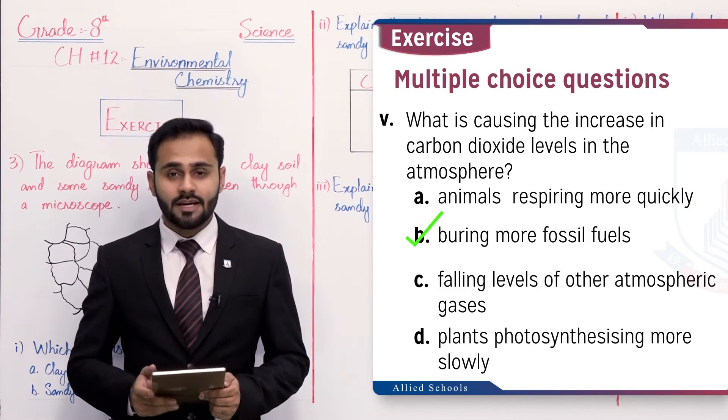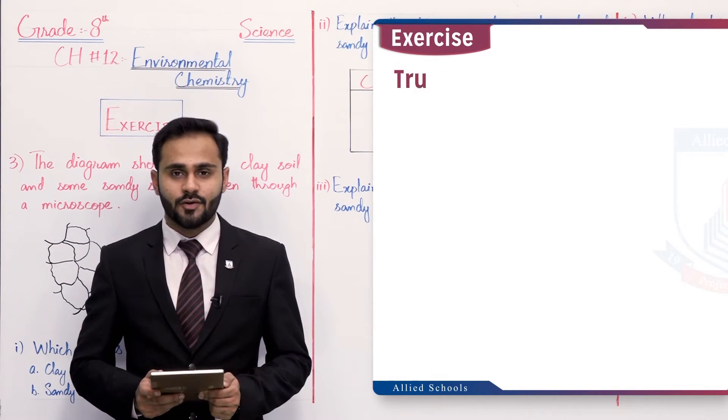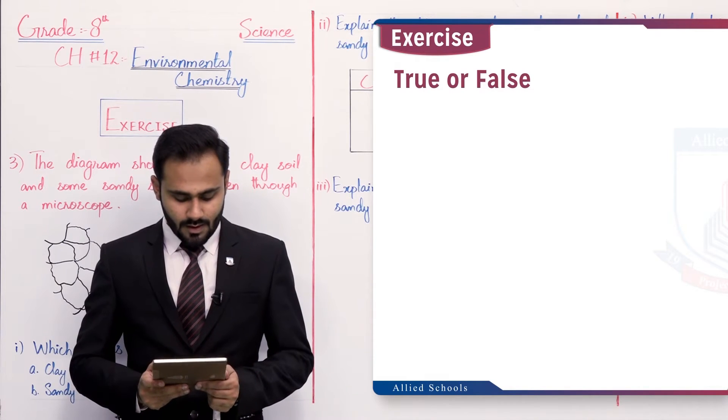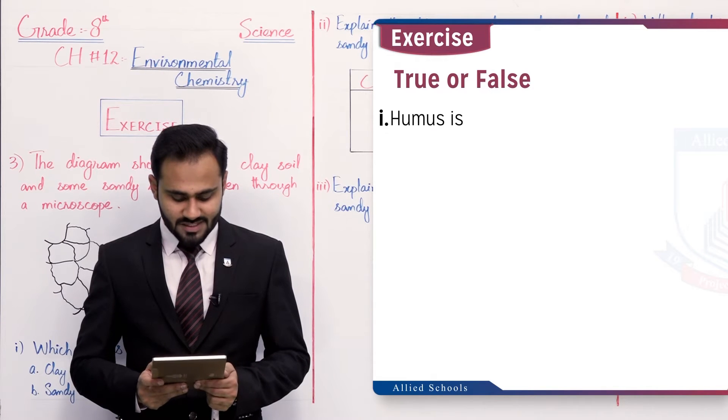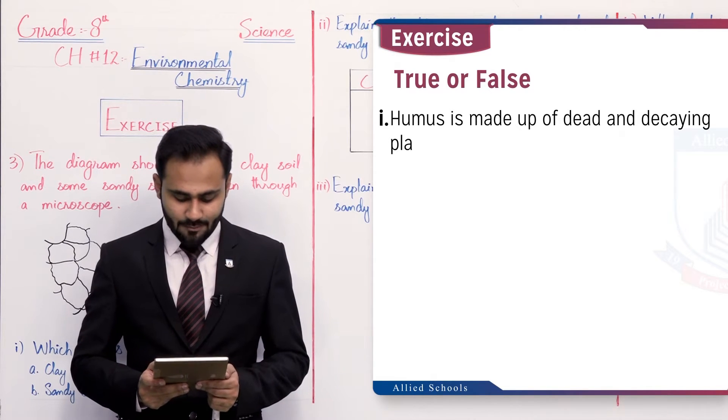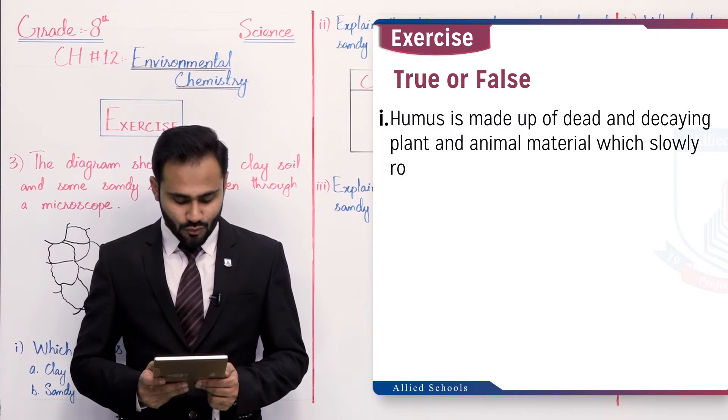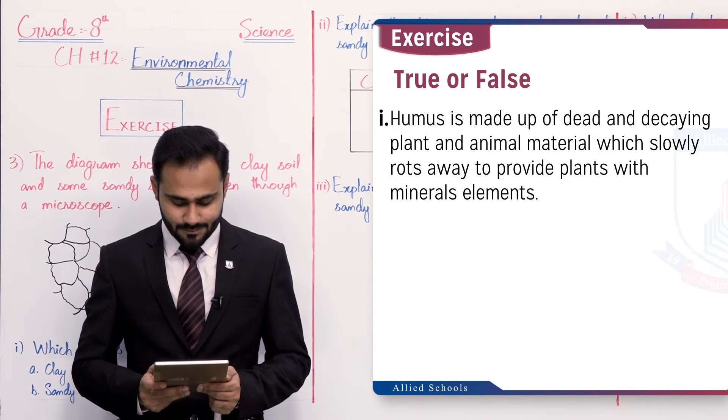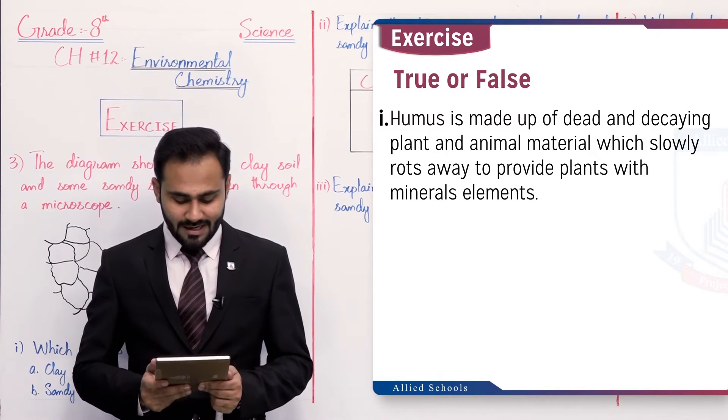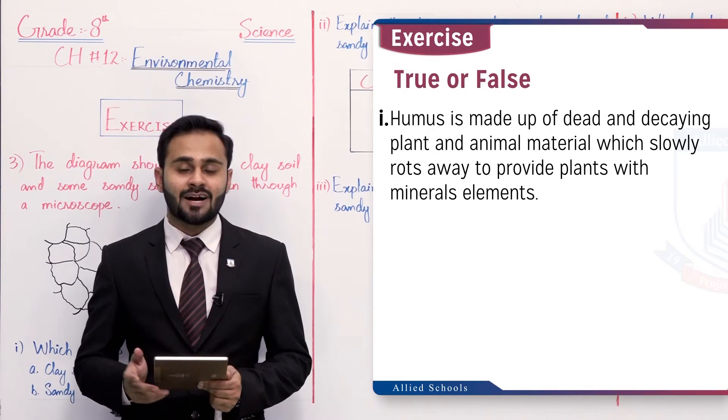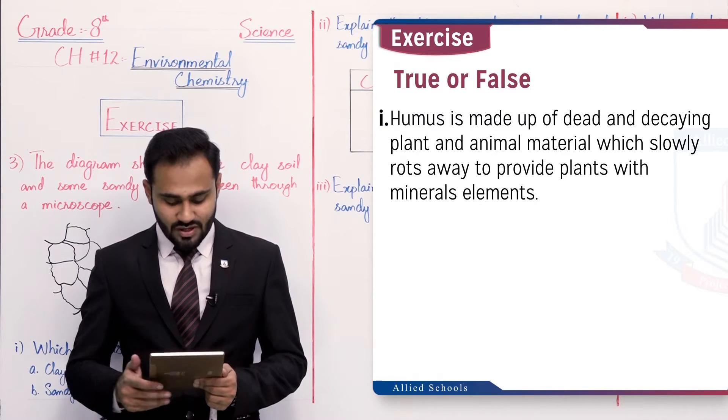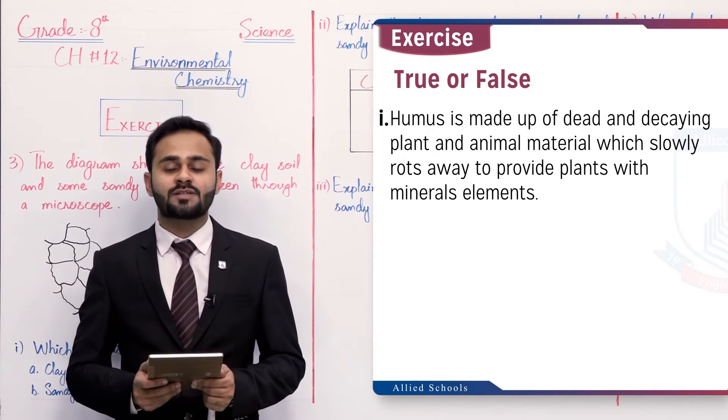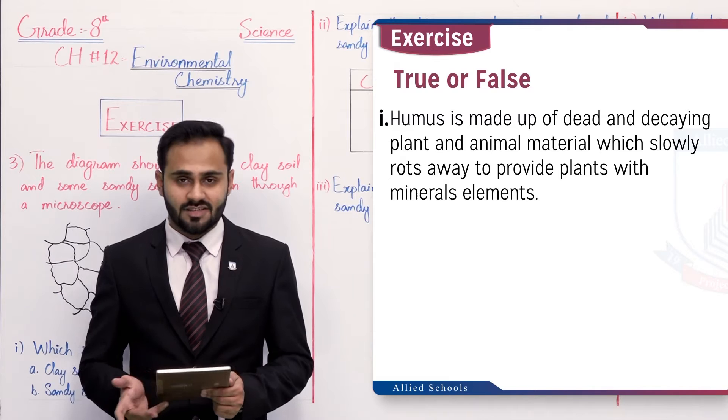Clear, so I hope yeh MCQs aapko clear ho gayi hongi. So abh hum start karte hain true or false, question number two. The first statement is: humus is made up of dead and decaying plant and animal material which slowly rots away to provide plants with mineral elements. Humus jo hai wo dead or decaying plants, animals material hota hai jo further plants ki growth ke liye helpful hota hai and they minerals also provide karta hai, so the statement is true.